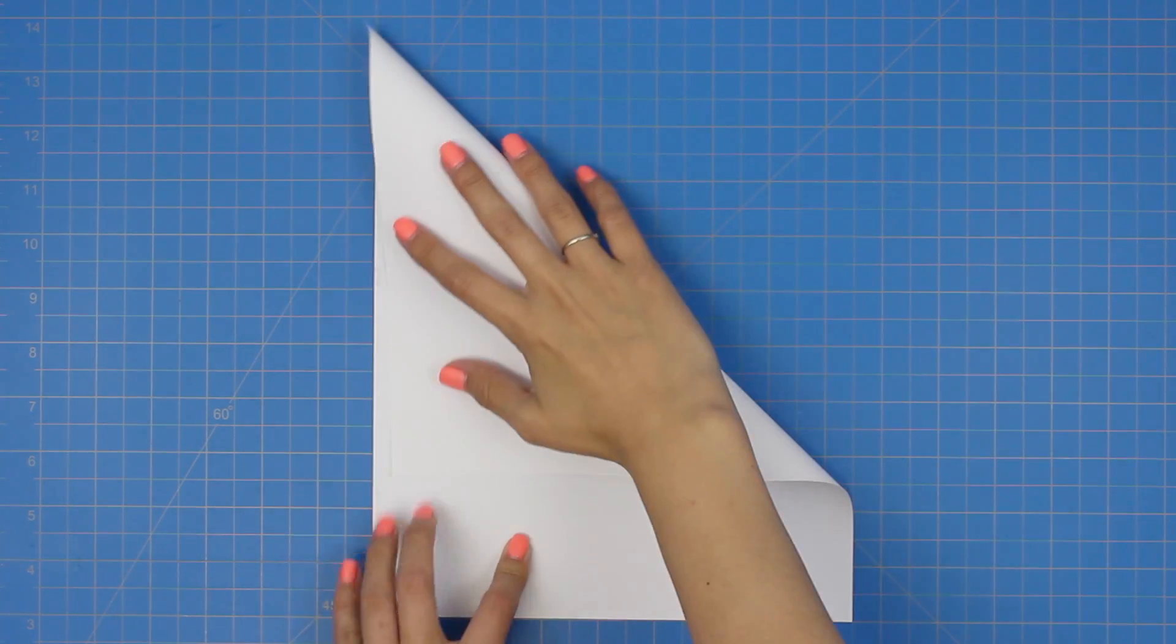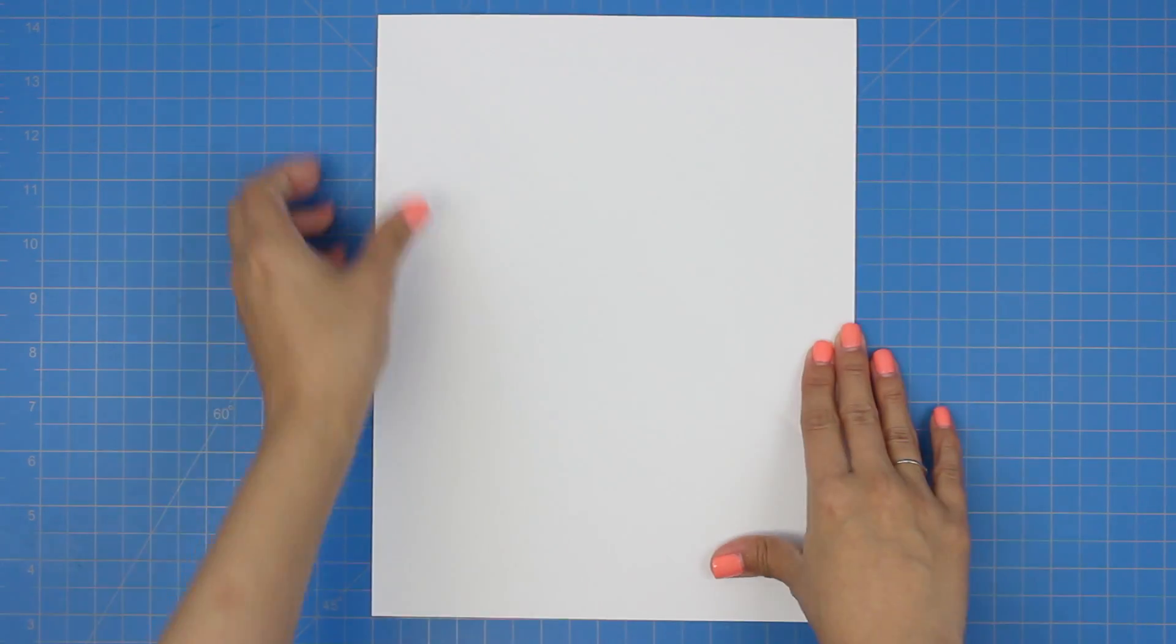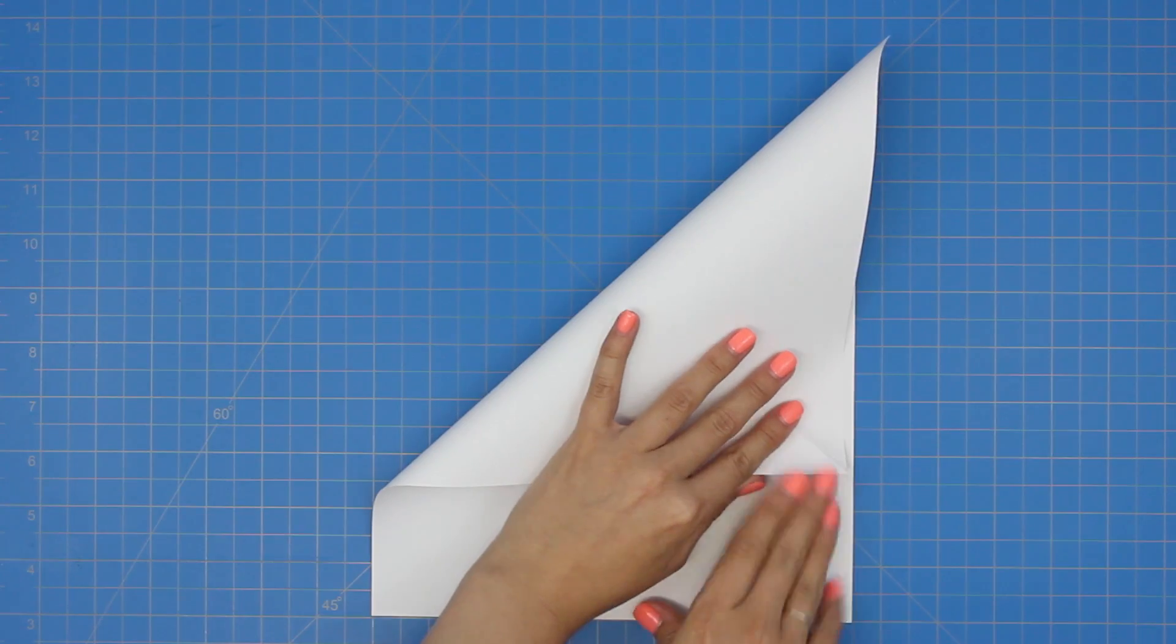First, take the top edge of the paper and fold it along the left side. Repeat with the other side and open the page back up.